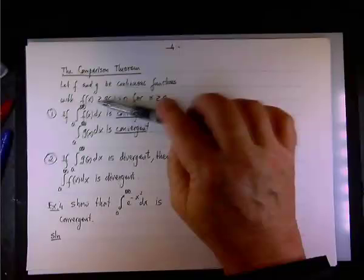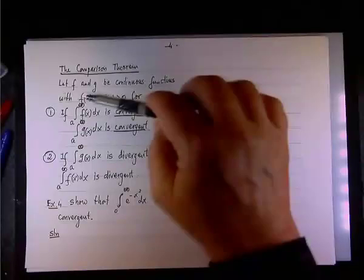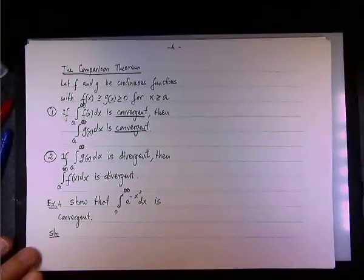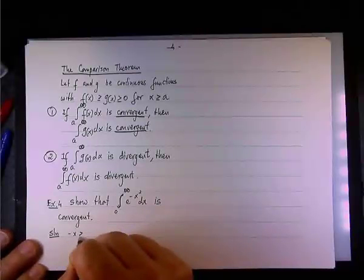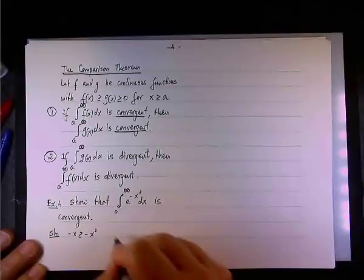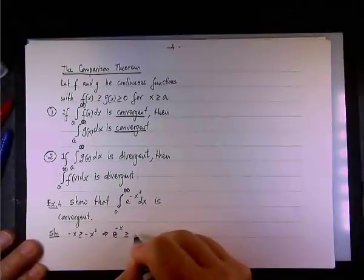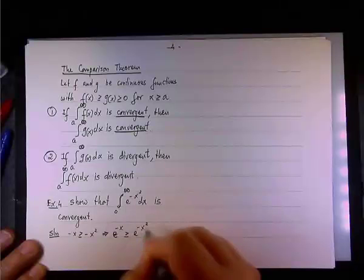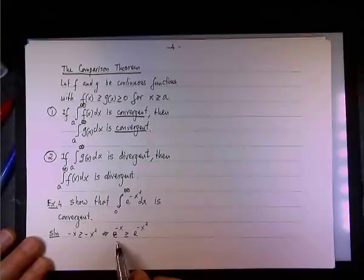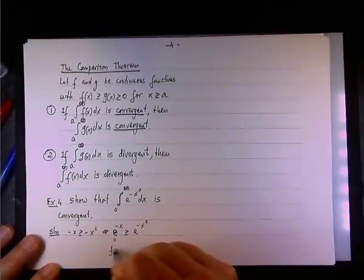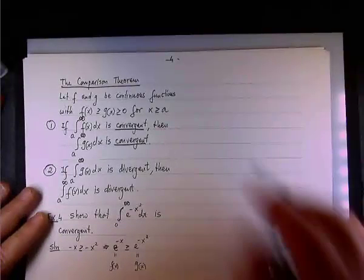To show convergence, we need to find a function f(x) that is greater than our function, so our function becomes g(x), the smaller of the two. To do so, we compare -x and -x²: we know -x is always greater than or equal to -x², and so e^(-x) is greater than or equal to e^(-x²), because x² makes the exponent more negative. So e^(-x) will be our f(x), and e^(-x²) is our g(x).